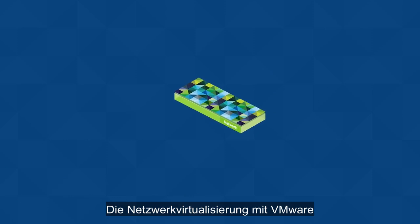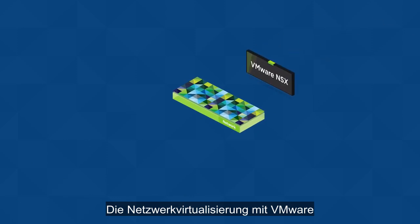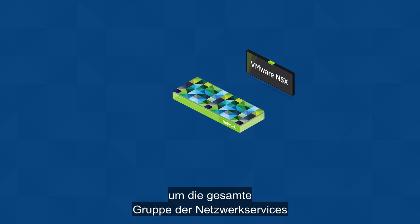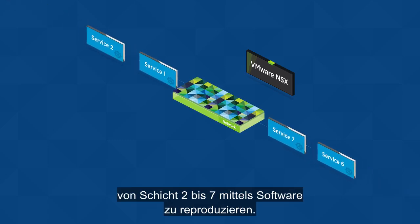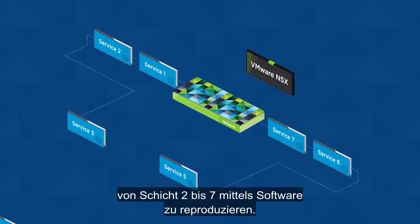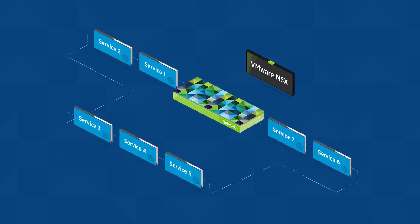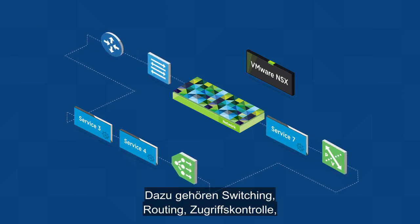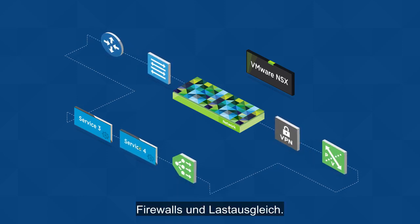Network virtualization with VMware NSX provides the functional equivalent of a network hypervisor in order to reproduce the complete set of layer two through seven networking services in software. This includes switching, routing, access control, firewalling, and load balancing.